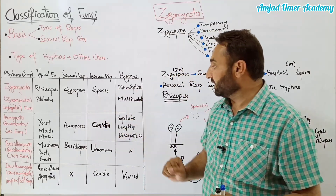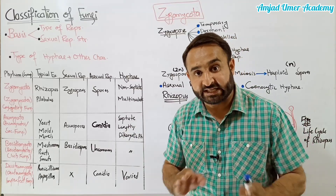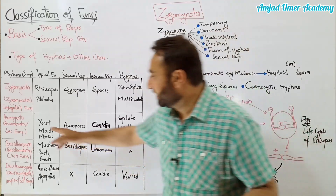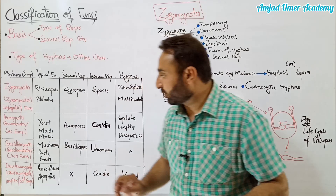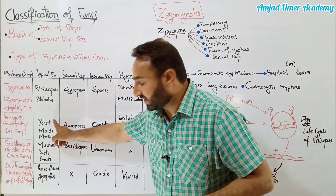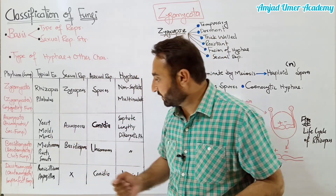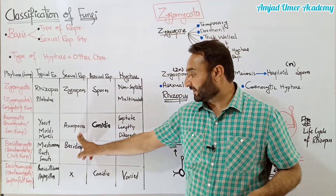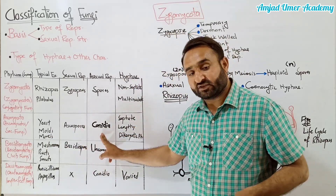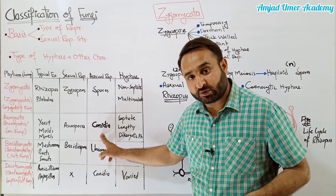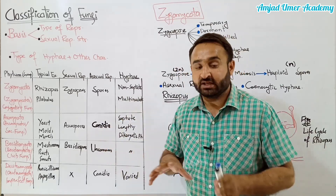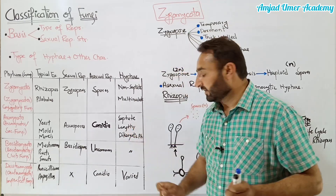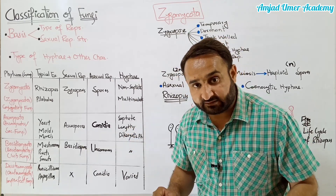Zygomycota mein spores hote hain; ye non-septate aur multi-nucleate, yani coenocytic hote hain. Ascomycota - jinhein Ascomycetes ya sac fungi kaha jata hai - ki example hai yeast, jo unicellular fungus hai, aur molds aur morals wagera bhi isi group mein hain. In mein ascospores hote hain, jo sexual spores hain. Asexual method of reproduction mein conidia hote hain, jo naked spores hain jinka mainne previous lecture mein zikr kiya tha.